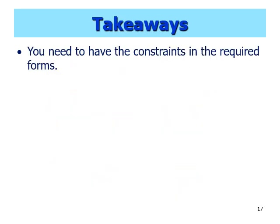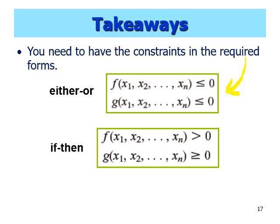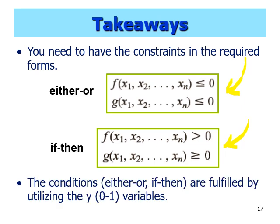The main takeaways of this section on formulating either-or and if-then conditions: you need to have the constraints in the required forms before proceeding — for either-or this is the specific form, and for if-then this is the specific form. The idea of controlling these conditions uses binary y variables that can only take the value of 0 or 1. If you have any questions, feel free to leave them in the comment section, send an email, or message in the IDE. Thank you.